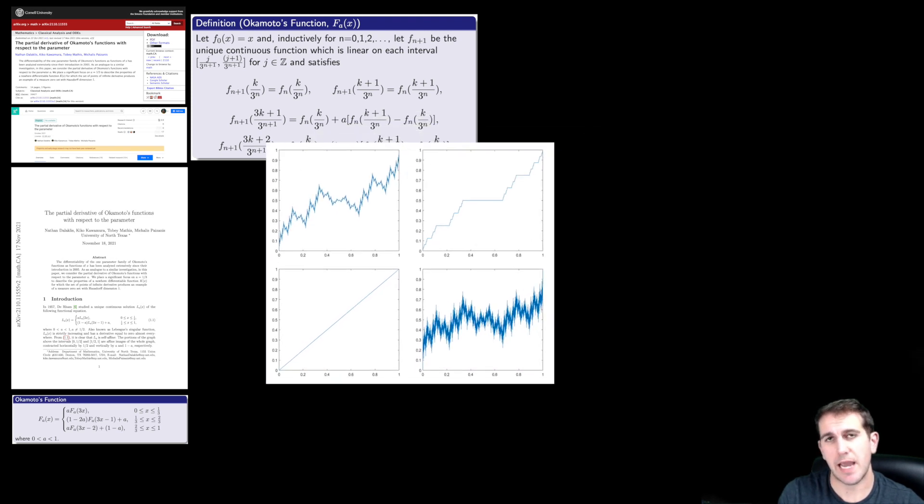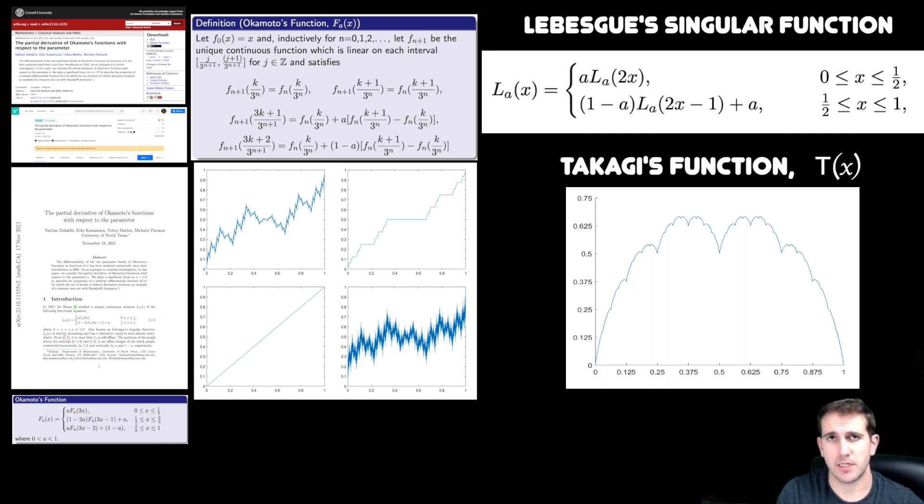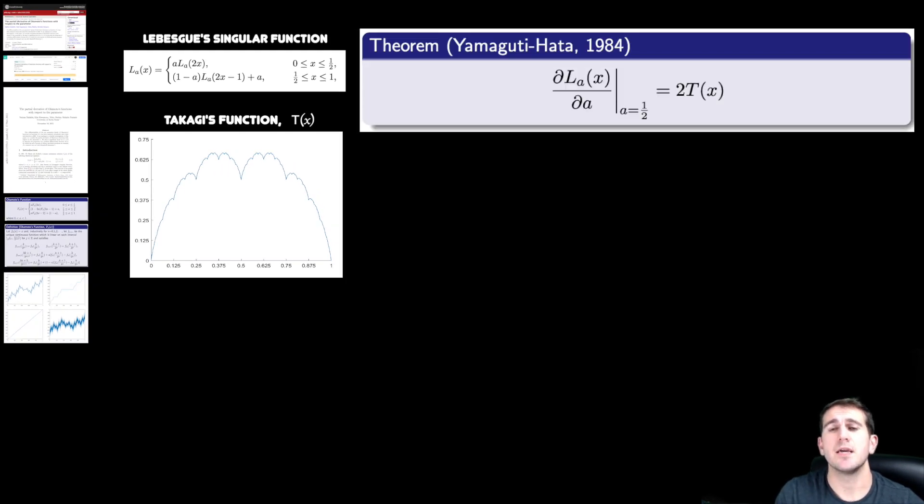So what they did is they looked at Lebesgue's singular function, which is a very similarly defined family of self-affine functions that are defined by one parameter. And they were able to make a connection to Takagi's function or the Blanc-Mange curve, which is a pretty accessible example of a Durham curve from fractal geometry. And the way that they made this connection was by looking at the partial derivative of Lebesgue singular function with respect to the parameter at the value of the parameter that Lebesgue singular function just spit out the identity function. It turns out that that value for Lebesgue singular function is the parameter equal to one half.